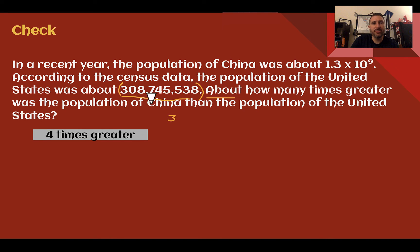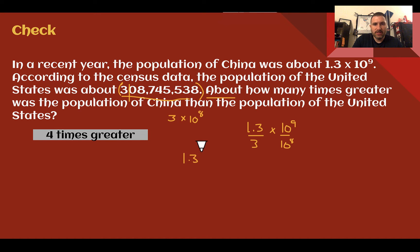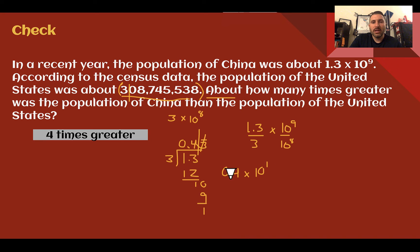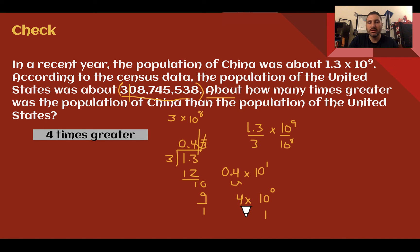To get that, first estimate the US population — that's about 3 times 10 to the 8th power. Since China is larger, divide: 1.3 divided by 3, times 10 to the 9th divided by 10 to the 8th. For 1.3 divided by 3: 3 goes into 1 zero times, 3 goes into 13 four times with 1 left over, giving us approximately 0.43 repeating. Because we rounded during estimation, round to one place: 0.4. Then 10 to the 9th divided by 10 to the 8th is 10 to the 1. So 0.4 times 10 to the 1 — move the decimal one place, subtract 1 from the exponent — gives 4 times 10 to the 0. Since 10 to the 0 is 1, the answer is just 4. China's population is about 4 times greater than the United States.